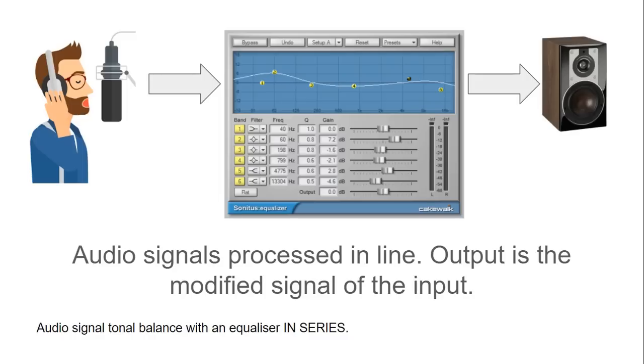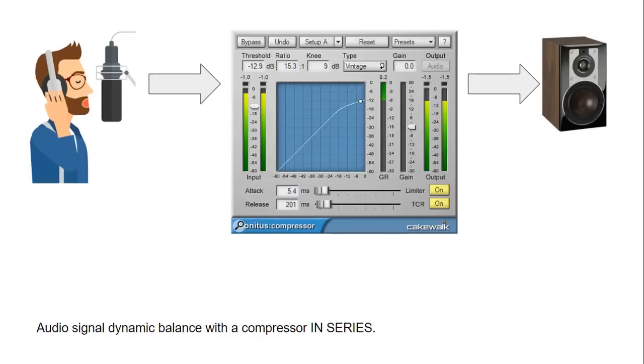As an example with an equalizer, the audio source from the microphone is given a different tonal balance with an equalizer and the output of the equalizer process is fed to the output. And another example would be a compressor. Again, the audio signal is fed to the input of the compressor, is given a dynamic balance with the compressor, and the output of the compressor is fed to the output stage.